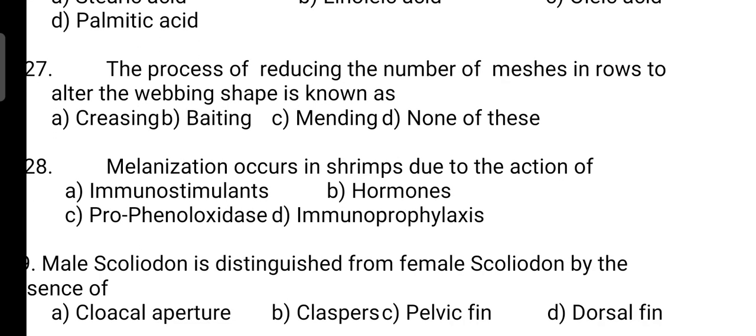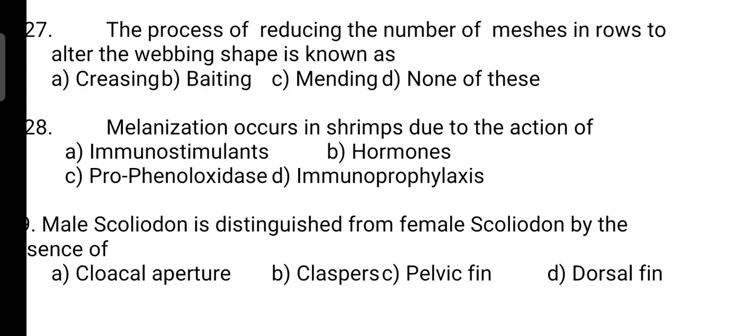The process of reducing the number of meshes in rows to alter the weaving shape is known as? Correct answer is Option B — it is beating. Next, melanization occurs in shrimp due to the action of? Correct answer is Option C — it is prophenoloxidase.